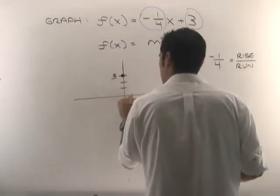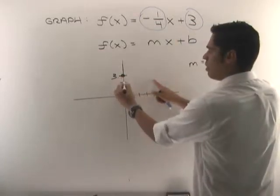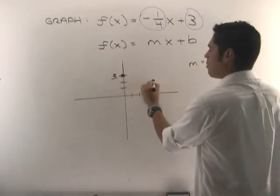So let me see. I'm going to go one, two, three, four. So this is four units. I went down one. I went over four. Here's another point on the line.